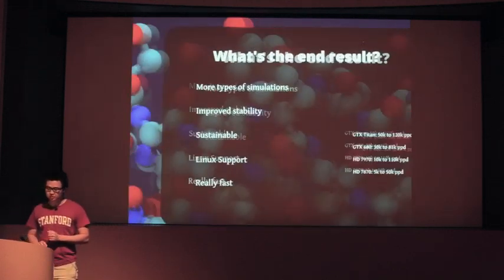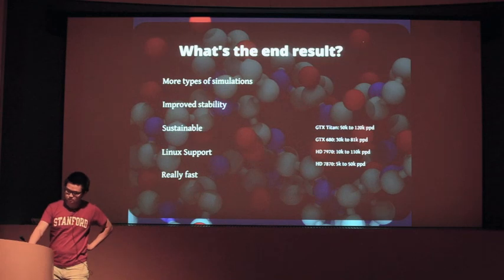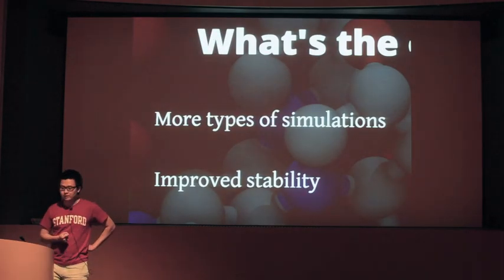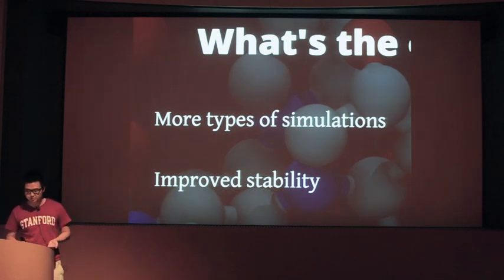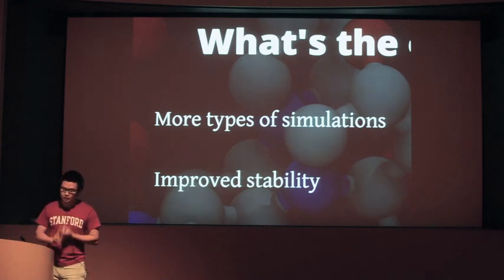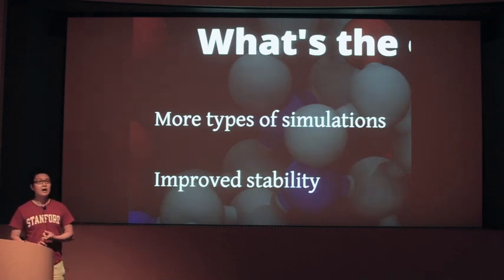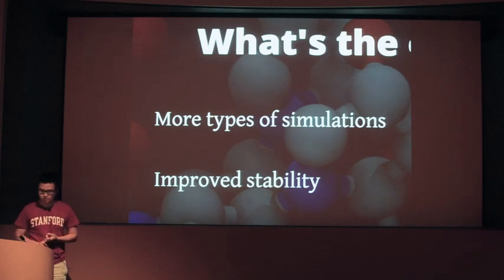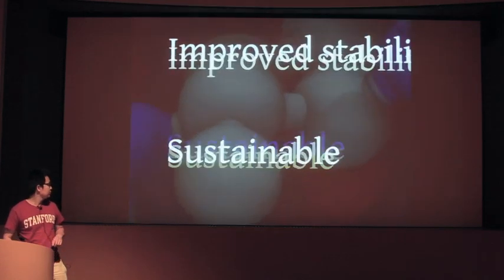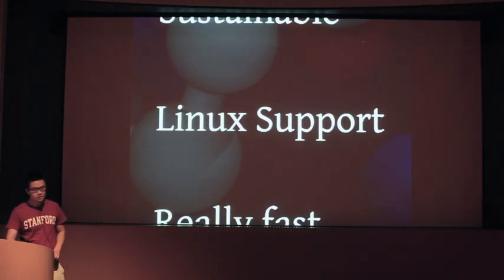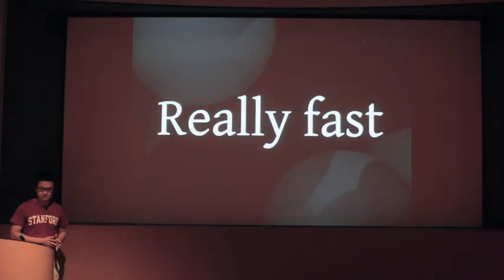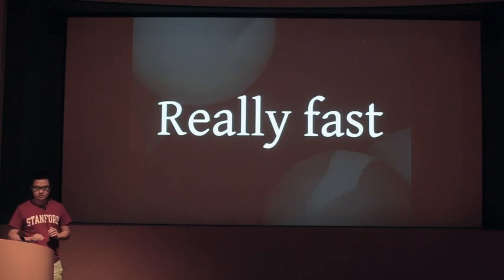And that brings us to today. We now support many more types of simulations, ranging from explicit solvent to large systems of up to 100,000 atoms. We improved the stability of our cores, and we now have a sustainable code base. We added support for Linux for the first time. And it's also really fast — and I'm sure the burning question on all of your minds is, just how fast is it?